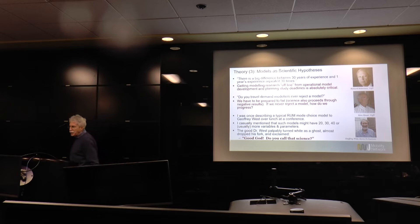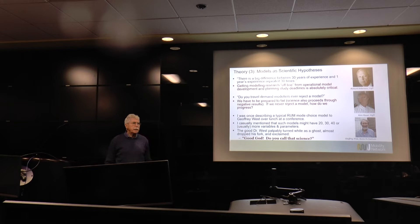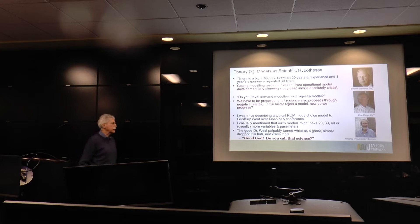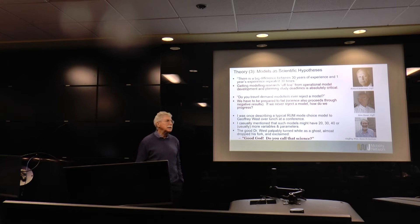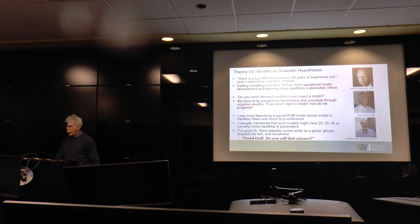Geoffrey West was the president of the Santa Fe Institute — actually a physicist who got interested in cities. I was once at a conference with him over lunch, talking about our random utility models. I mentioned there might be 40, 50, 60 parameters in a typical model. He hit the roof because he's a physicist — E equals mc squared describes the universe. He didn't believe that having 60 empirically derived parameters from a small sample in one location, which are not transferable elsewhere, represents good science. And I think that's something we need to be asking ourselves.